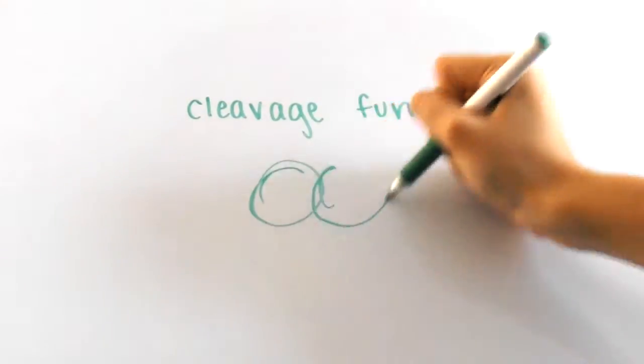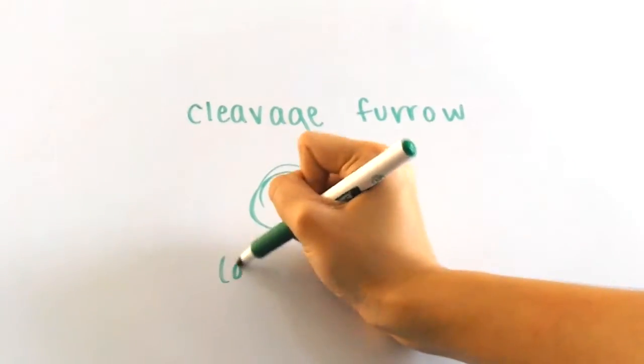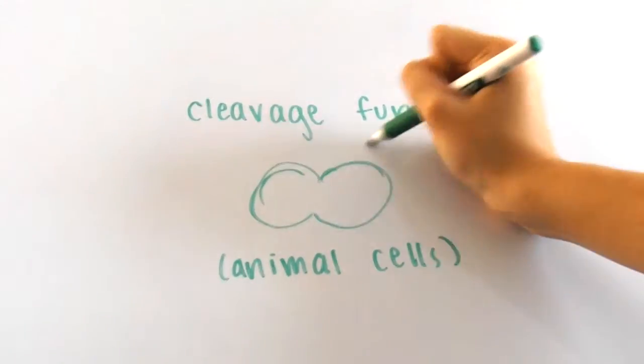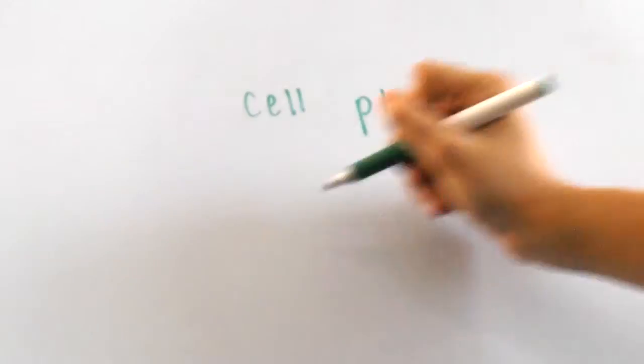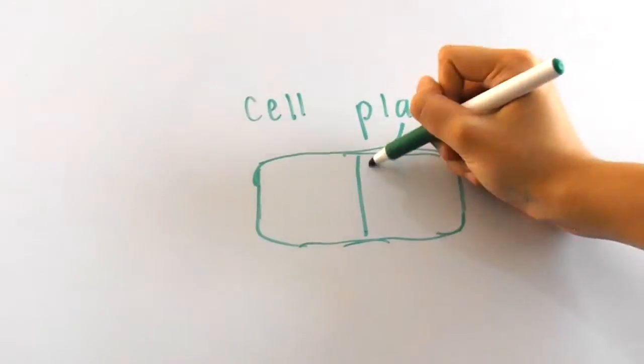As you can see from these two cells starting to divide, a cleavage furrow forms in between them. This is when you know they're animal cells because something called a cell plate forms in plant cells. This is because plant cells have cell walls and animal cells don't.